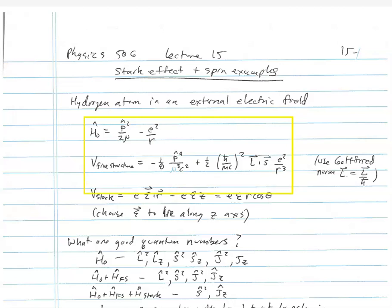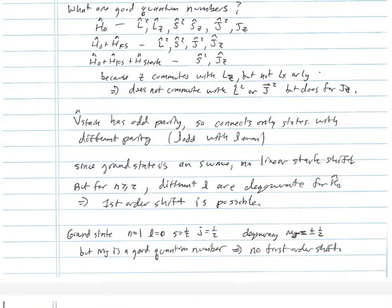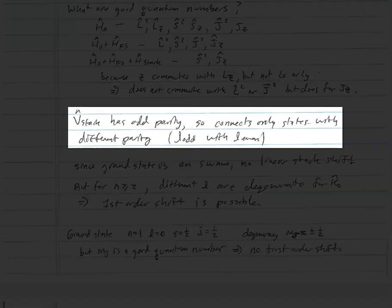But when we look at the Stark effect, neither l² nor j² commute with the coordinate operator z, and that means we're left with just s² and jz as the good quantum numbers. Now V_Stark has odd parity because it's proportional to z, so it will only connect states with different parity. If you take all coordinates and momenta and switch their sign, z goes to minus z. If it changes sign, it's odd. Because V_Stark has odd parity, it can only connect states with different parity, which means they must have different l values.